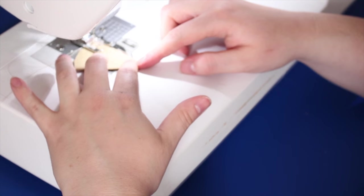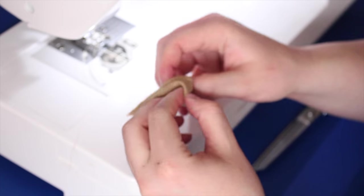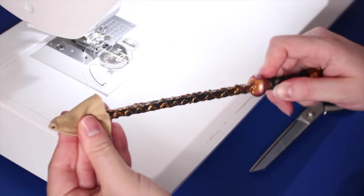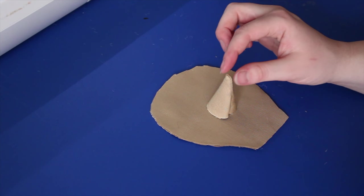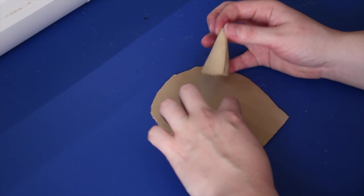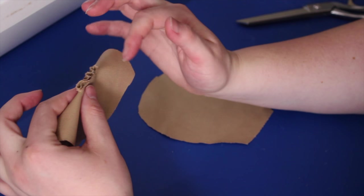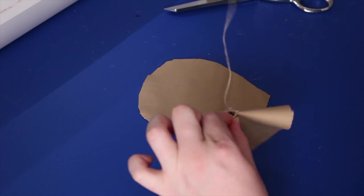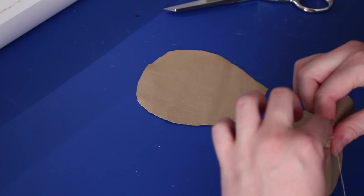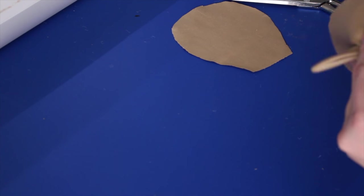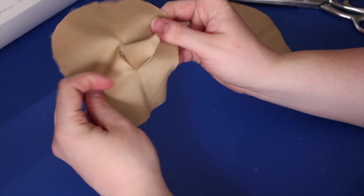Time to sew the nose. I'm making a slit right where the nose is supposed to go. I'll hand sew the nose on. Now that the nose is done, I'm going to stuff it with stuffing. There's Dobby's nose.